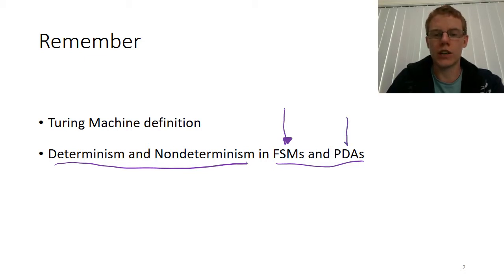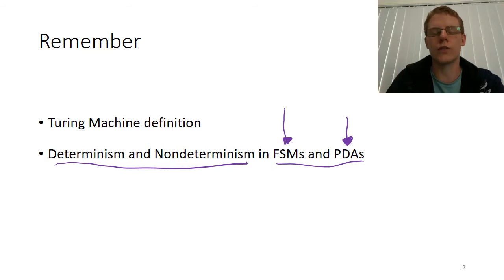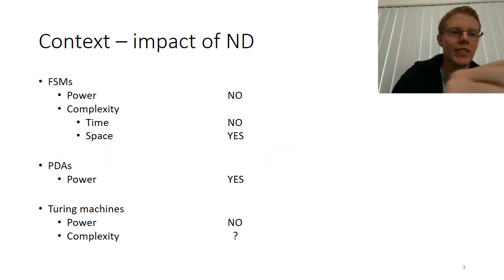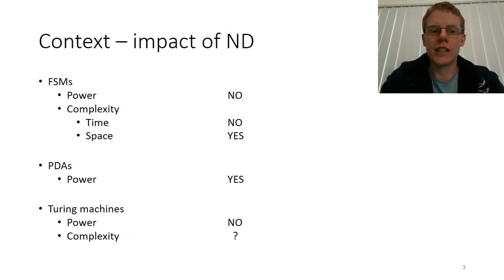For push down automata this wasn't true. We had a set of non-deterministic context free languages — the whole set of context free languages — and we showed that it had a strict subset called the deterministic context free languages. The question for us is how this plays out when we get to Turing machines.